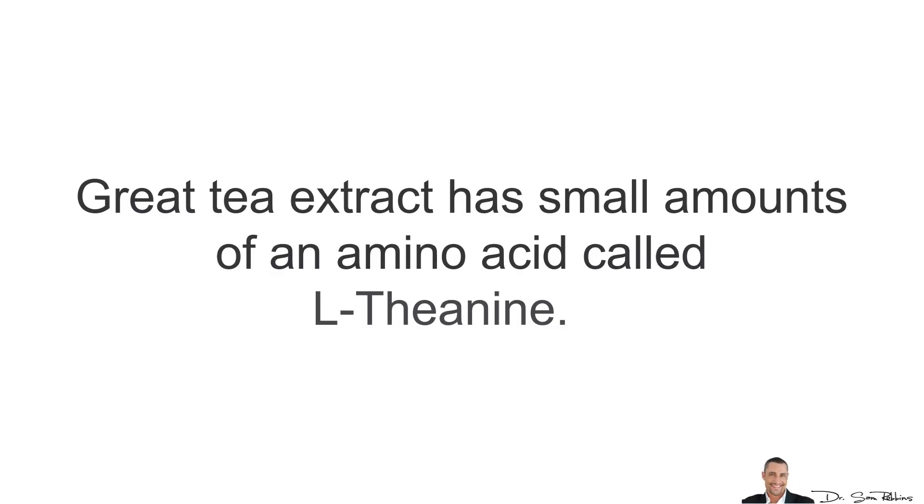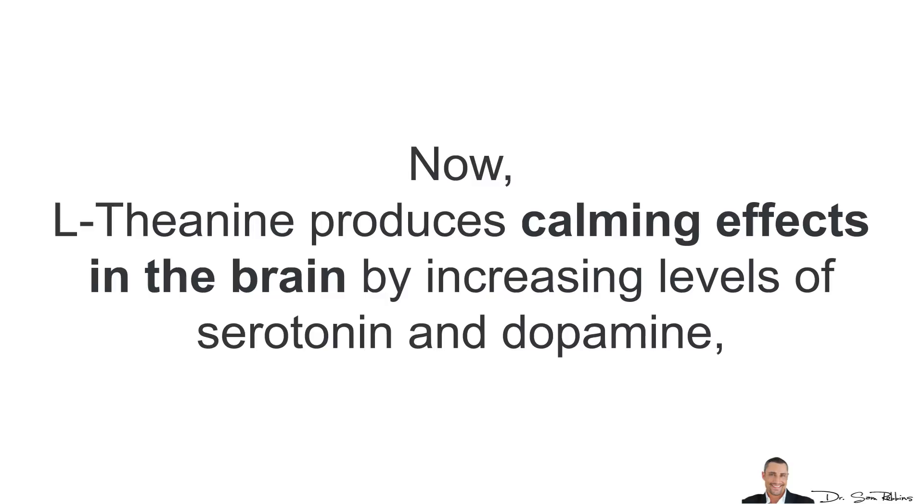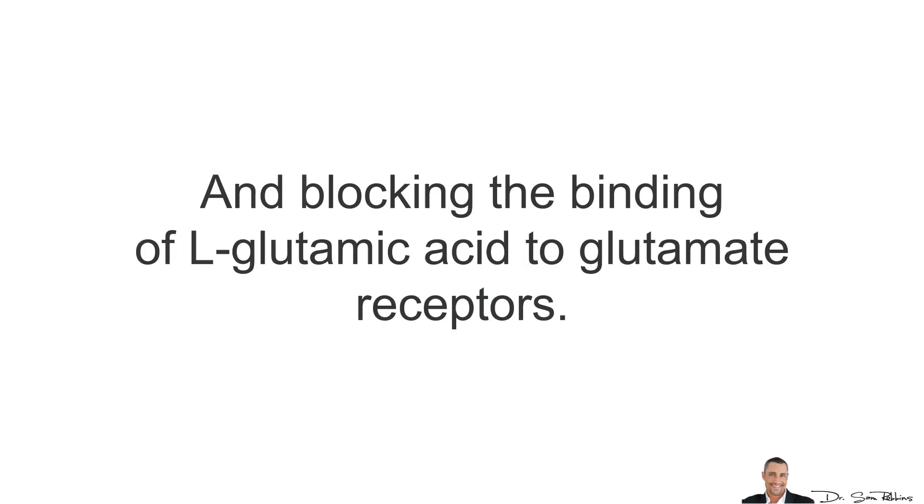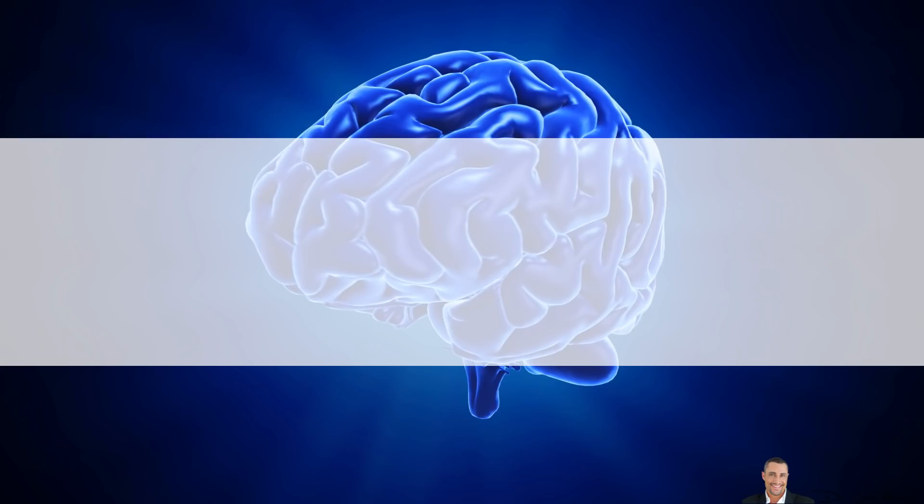And finally, the third one is Green Tea Extract. Green Tea Extract has small amounts of an amino acid L-theanine. You need to drink a lot of green tea to get the clinical benefits of the L-theanine, so that's why I just recommend taking L-theanine amino acid by itself. L-theanine produces a calming effect in your brain by increasing levels of serotonin and dopamine, and by also blocking the binding of L-glutamic acid and glutamate receptors. This allows L-theanine to cross the blood-brain barrier and increase dopamine levels in your brain.